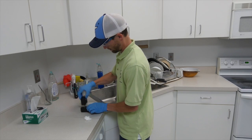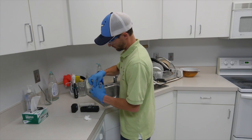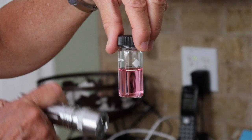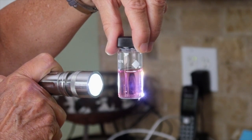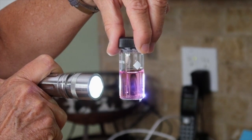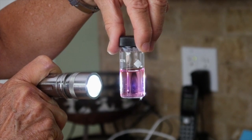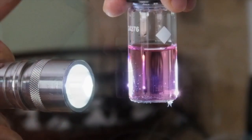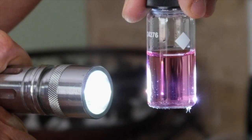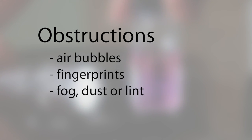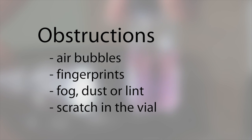The method works by adding a chemical called DPD to the sample. If chlorine is present, a pink color will form. A spectrophotometer works by shining light through a sample and measuring the intensity of the light. The pink color blocks light and the decrease in light intensity is measured. It is important to remember that anything that blocks light can impact the result. This can include air bubbles, fingerprints, fog, dust or lint, or a scratch in the vial.